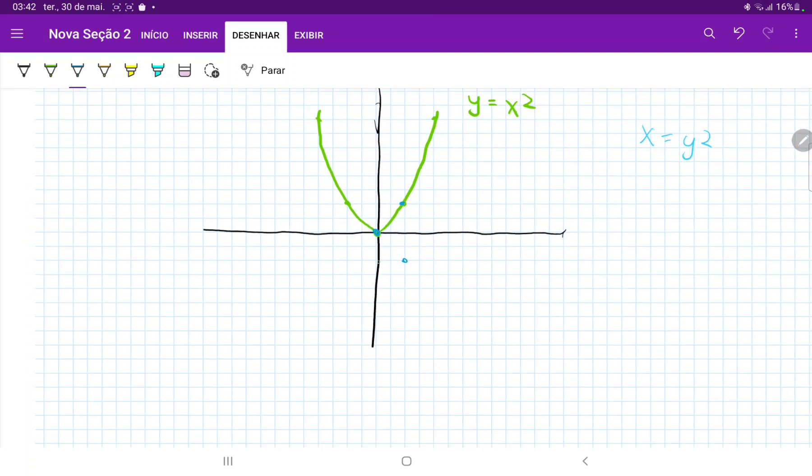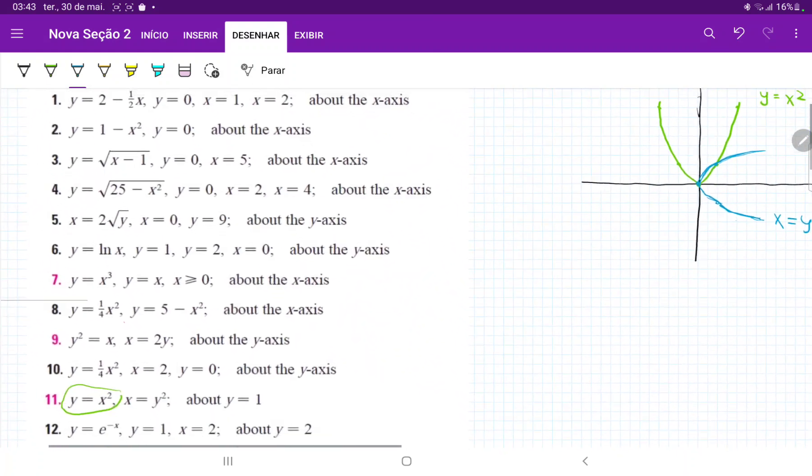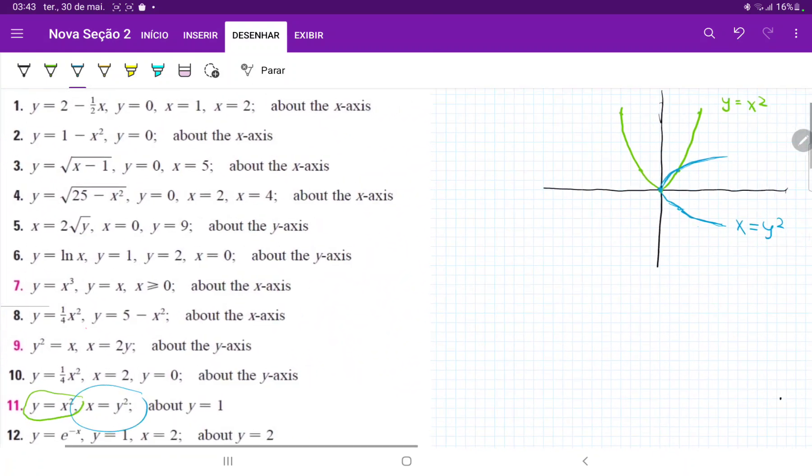And this one is going to go here. So that was actually a terrible drawing, but hopefully you guys get it. X equals y squared. And let's see what's our other curve about the line y equals 1.